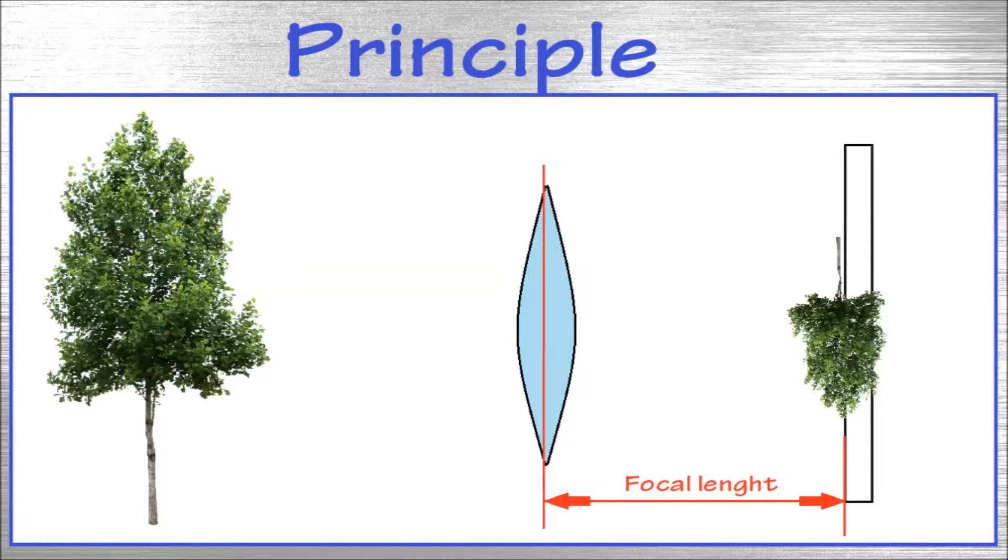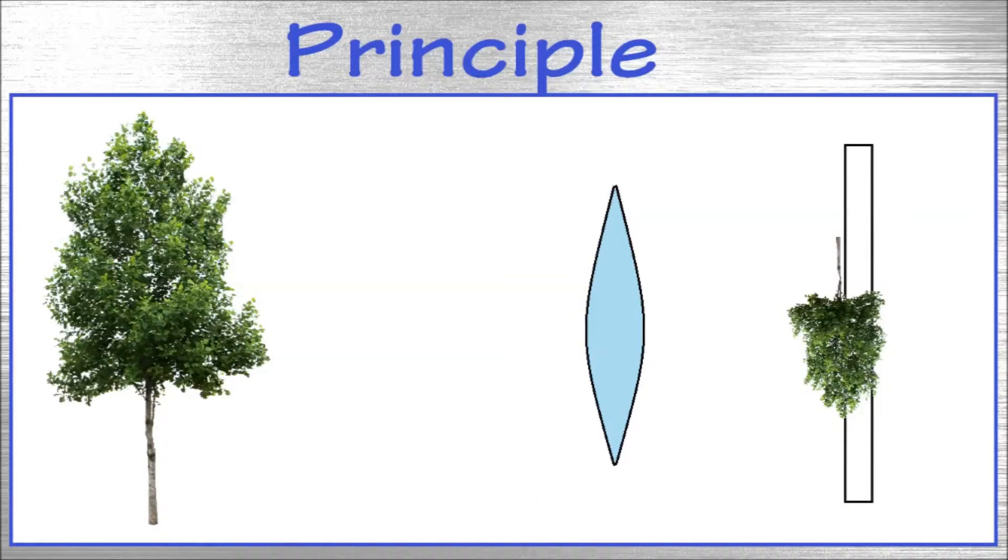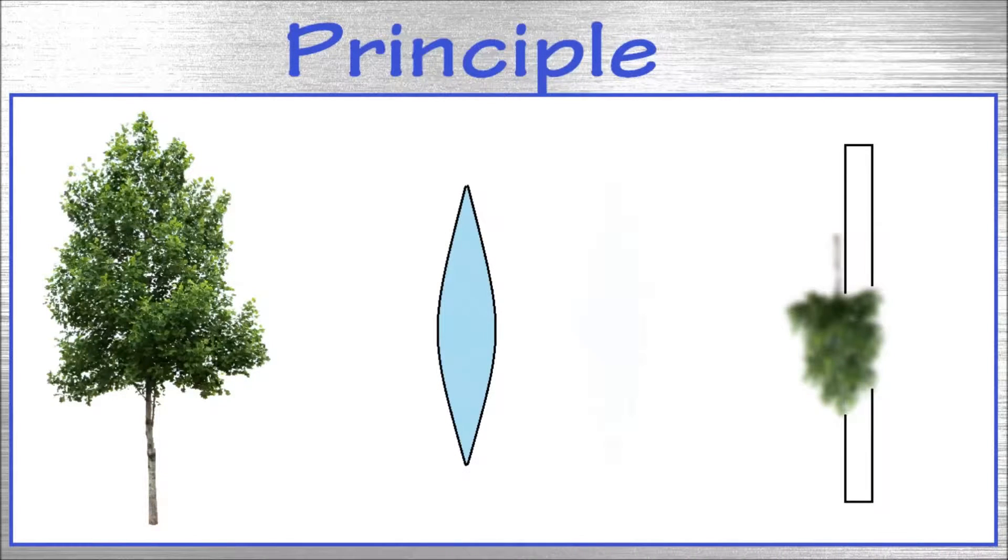The focal length is a unique property to each lens. If the distance is increased or decreased from the focal length the image will get blurry.